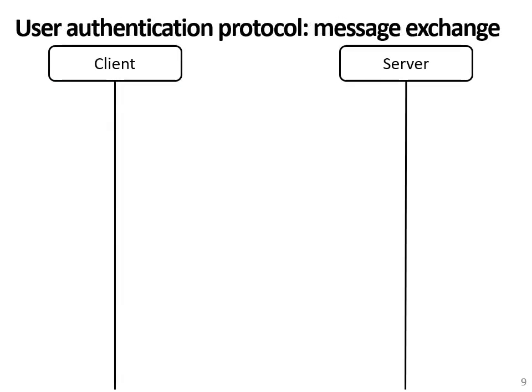Now let's take a look at the other two protocols. The first is the user authentication protocol, which is an optional protocol that allows the client to also authenticate with the server — because in the handshake, only the server authenticates with the client.